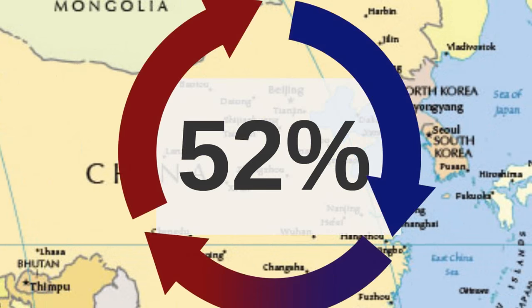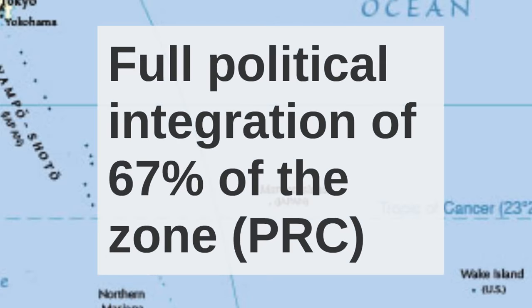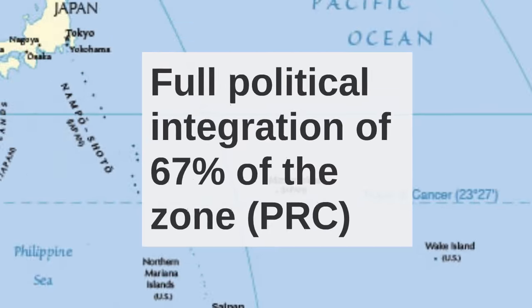In East Asia, more than half of total exports are to other countries within East Asia. But within East Asia, there's full political integration of only 67% of the zone, so a much smaller proportion of East Asian production occurs within an integrated political entity. And even then, that integrated political entity is the poorest area of the zone. The peak area of the zone — Japan, South Korea, Taiwan — is not well integrated into the main body of the zone, which is composed of the People's Republic of China.